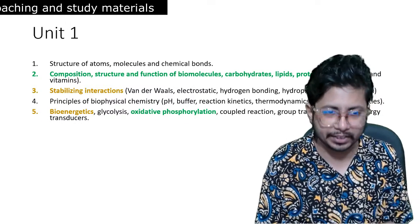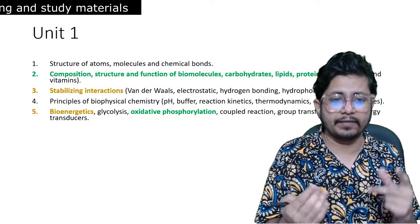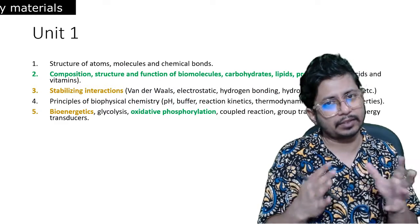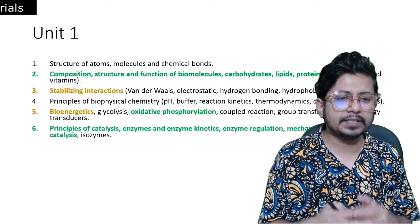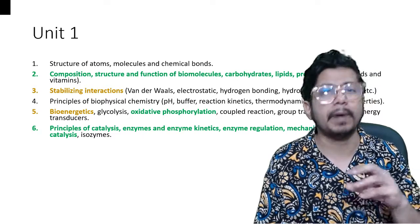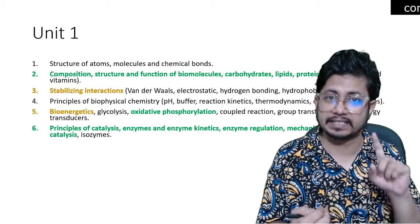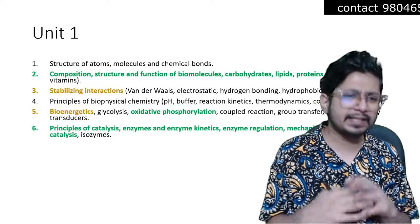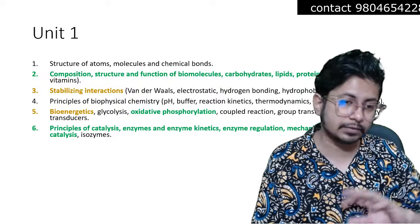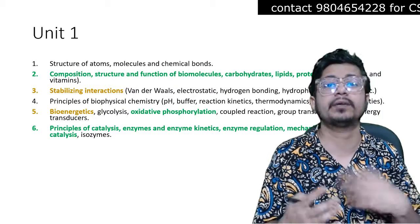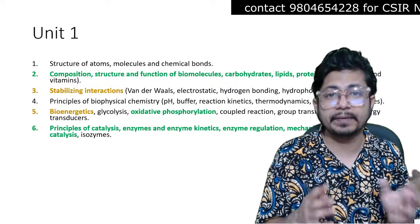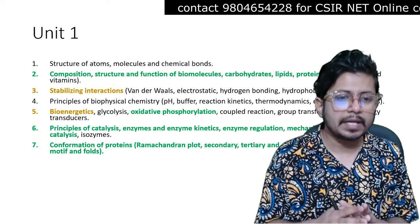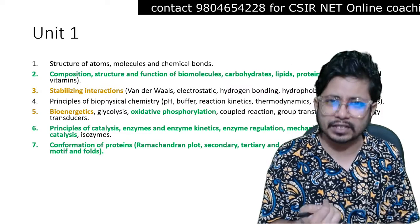Bioenergetics is important — that is the delta G, free energy changes. We also have parts of metabolism: glycolysis, oxidative phosphorylation — and oxidative phosphorylation is very very important. The next is principle of catalysis — the enzyme part of biochemistry — covering enzyme kinetics, enzyme regulation, mechanism of enzyme catalysis, and isozymes. Enzyme inhibition and the principle of catalysis are very very important.